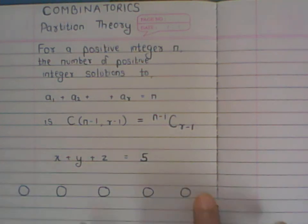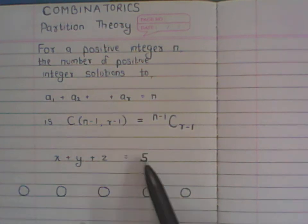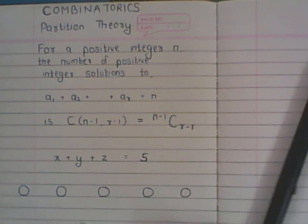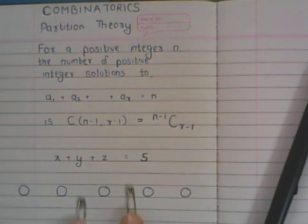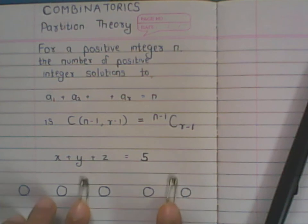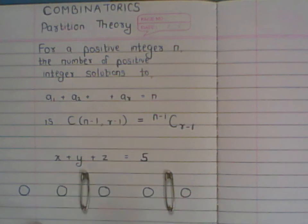So the only valid placement is within the interior gaps between the balls. With five balls, there are exactly four gaps between them — that's where the n minus one comes from. You have four gaps and you choose two of them to place your two partitions. Each distinct arrangement of partitions gives a new solution.